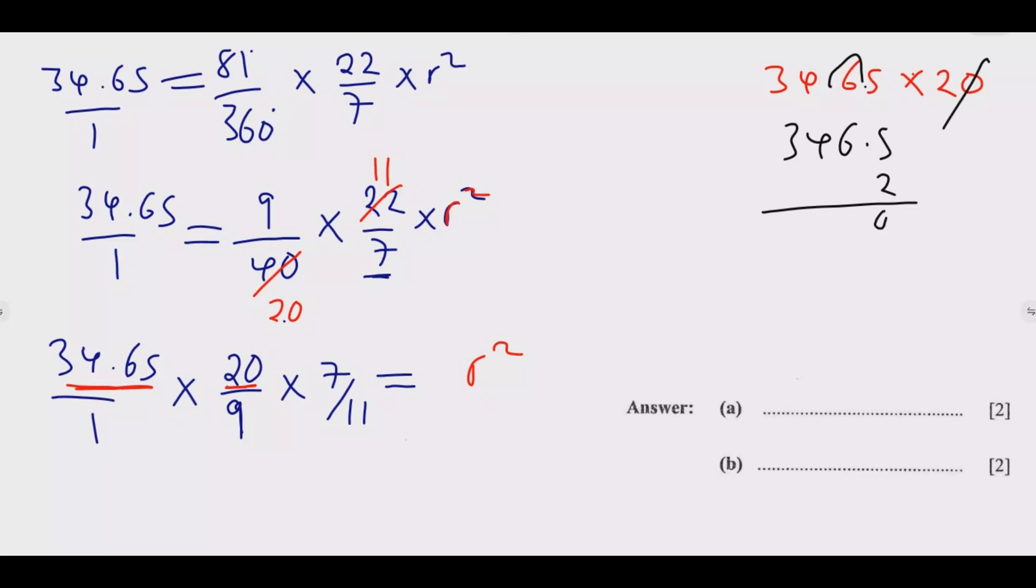So it will be 2 times 5, it will be 10. Carry 1, 2 times 6 is 12, plus 1, 13. Carry 1, 2 times 4 is 8, plus 1, 9. 2 times 3 is 6. Then because of this one decimal point, I've got 693, because of this one decimal place. Alternatively, we could just have multiplied this number, just written it as 3465 multiplied by 20, then move the two decimal places, we are still going to get 693.